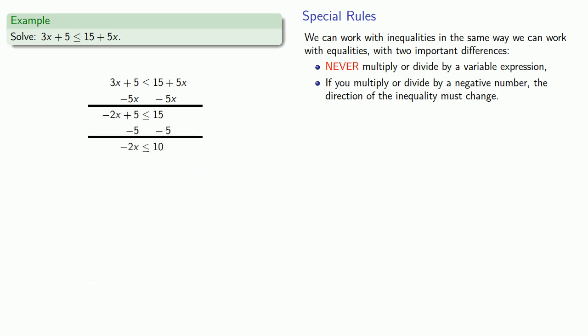And if this was an equation, my next step at this point is to divide by negative 2. Well, we can do that as long as we keep in mind that when we multiply or divide by a negative number, the direction of our inequality must change.